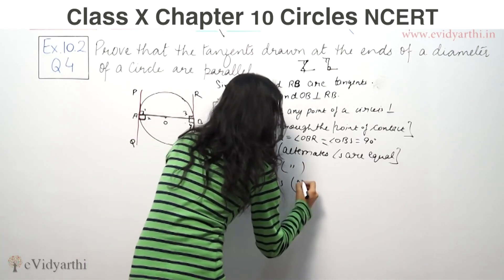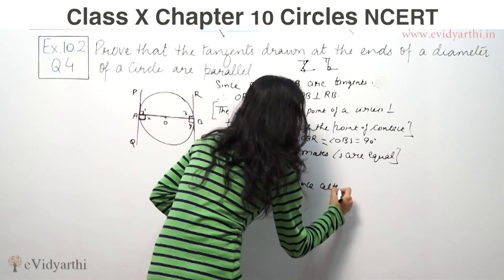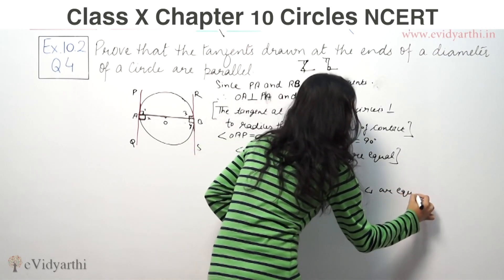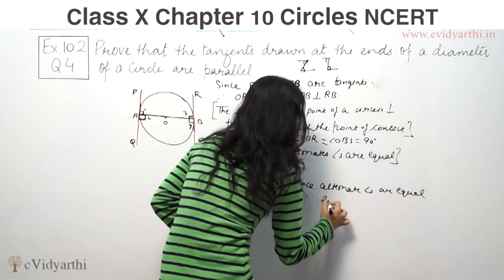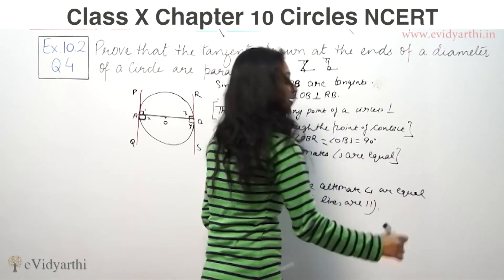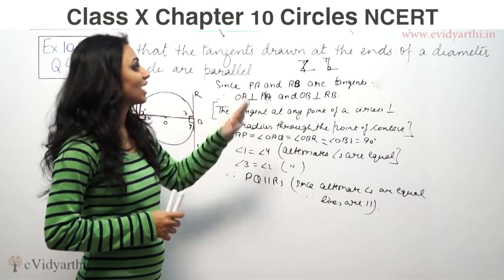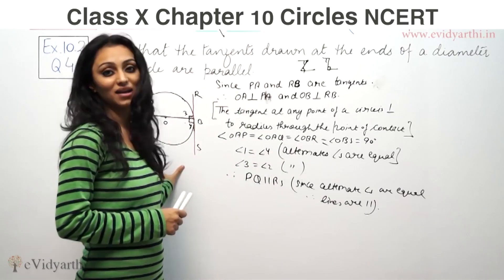That means since alternate angles are equal, therefore the lines are parallel. This is the Z-form for parallel lines. Tangents drawn at the ends of a diameter are parallel.